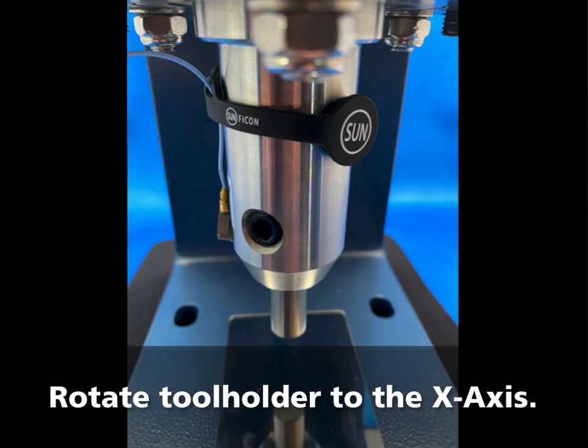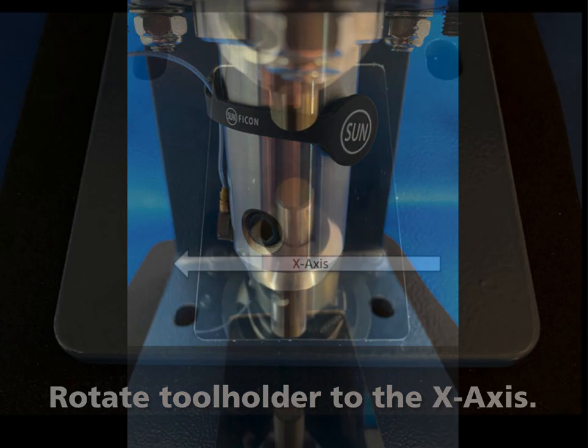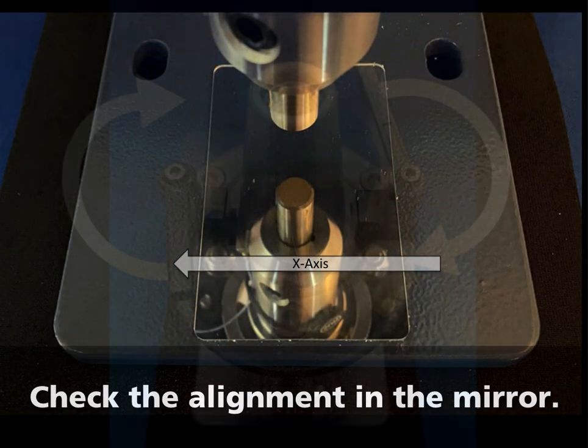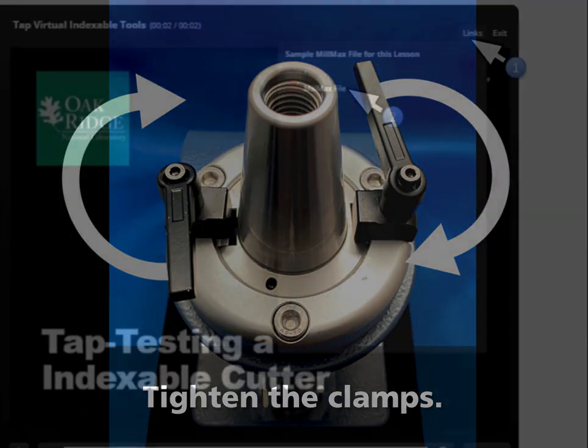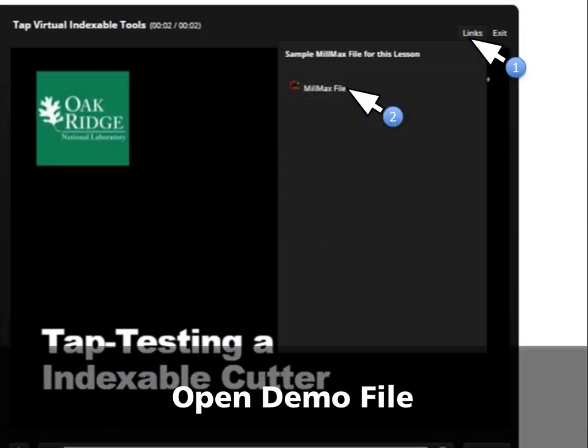Rotate the tool holder so the accelerometer is on the x-axis. Check the alignment in the mirror. Tighten the clamps. Click on the links in the upper right of your screen to open the demo Mill Max file for this lesson.